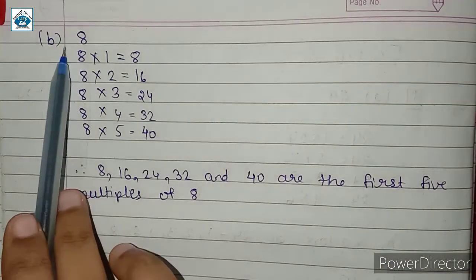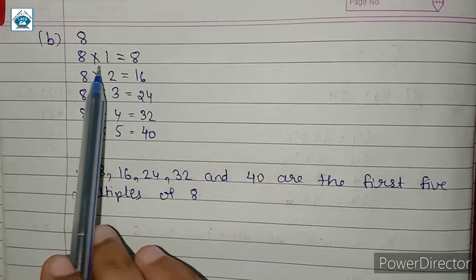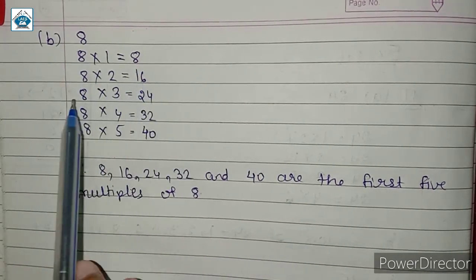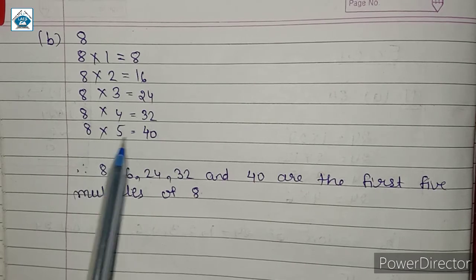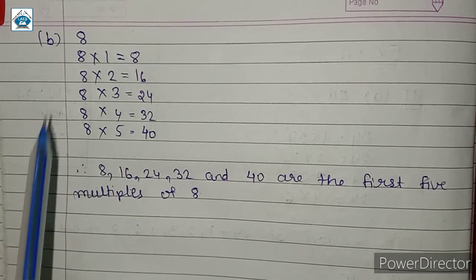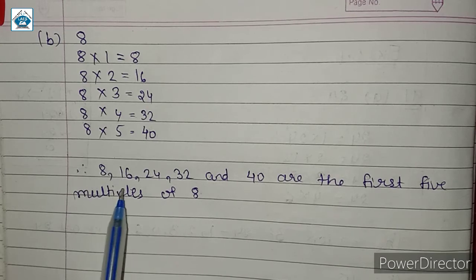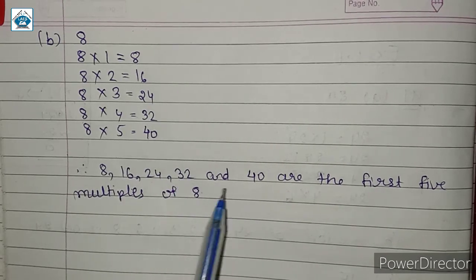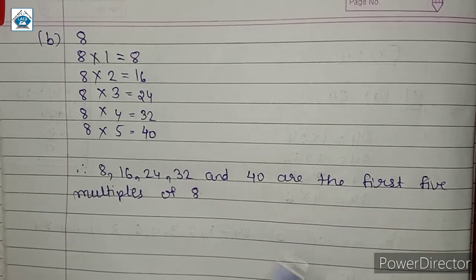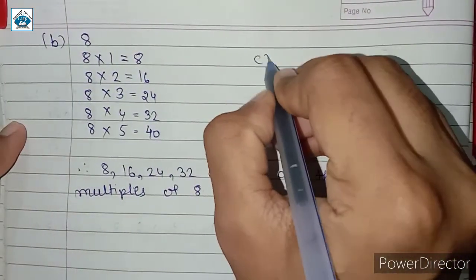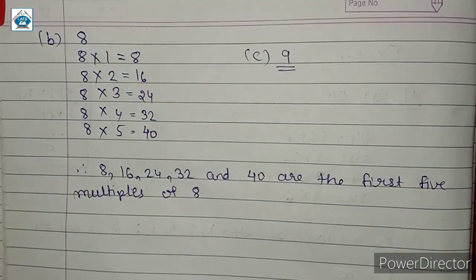Next, the first 5 multiples of 8: 8 × 1 = 8, 8 × 2 = 16, 8 × 3 = 24, 8 × 4 = 32, and 8 × 5 = 40. Therefore, 8, 16, 24, 32, and 40 are the first 5 multiples of 8. Similarly, you have to find the first 5 multiples of 9 for part c.